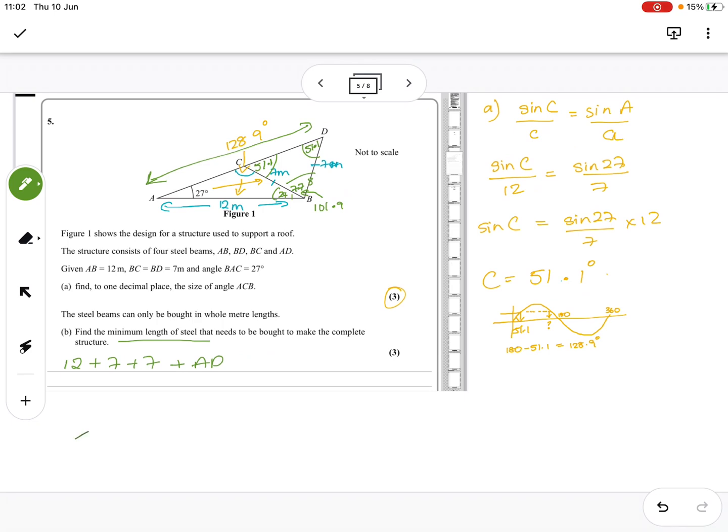So now, if we just think about this, I've got this angle as 101.9. I want to find that. I know that is 12 and that is 7. So it's going to be a cosine. So ad squared or a squared equals b squared plus c squared minus 2bc cos a. In this case, it's AD squared equals 12 squared plus 7 squared minus 2 times 12 times 7 times cos of 101.9. AD squared equals 227.642, square root to that answer. AD is 15.09.